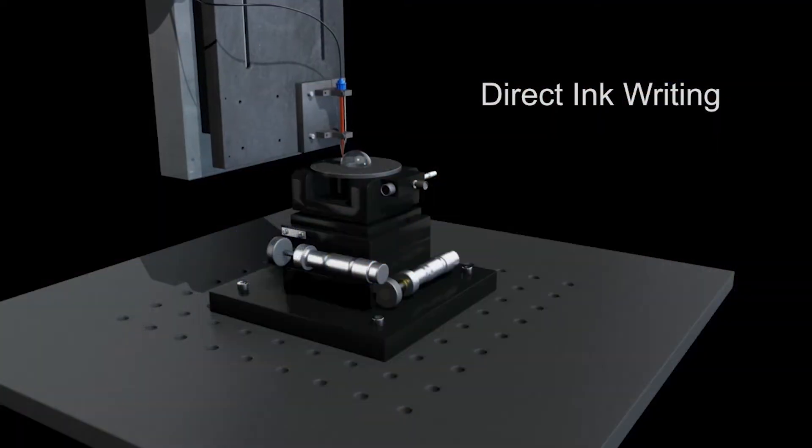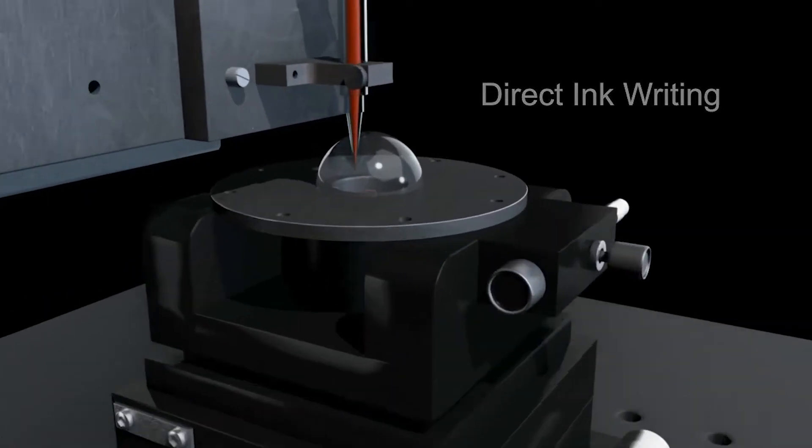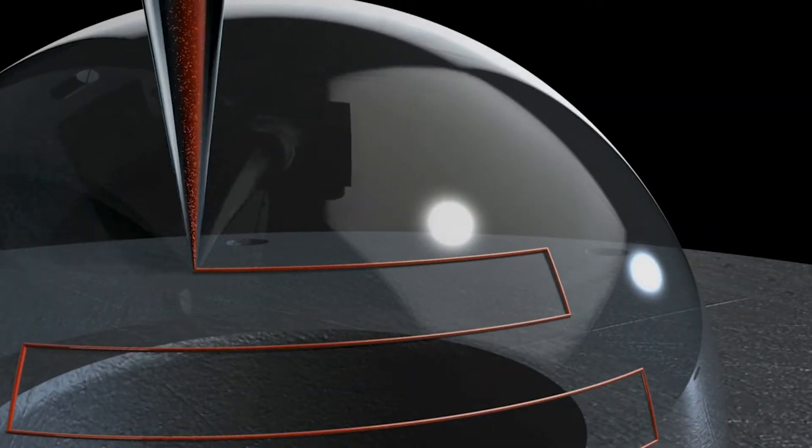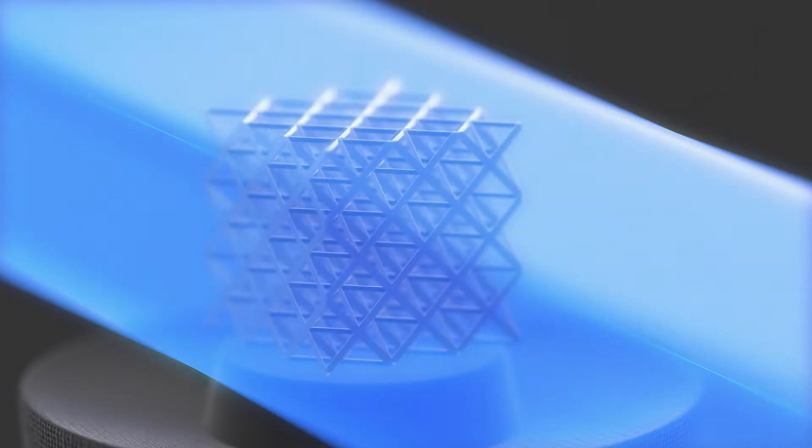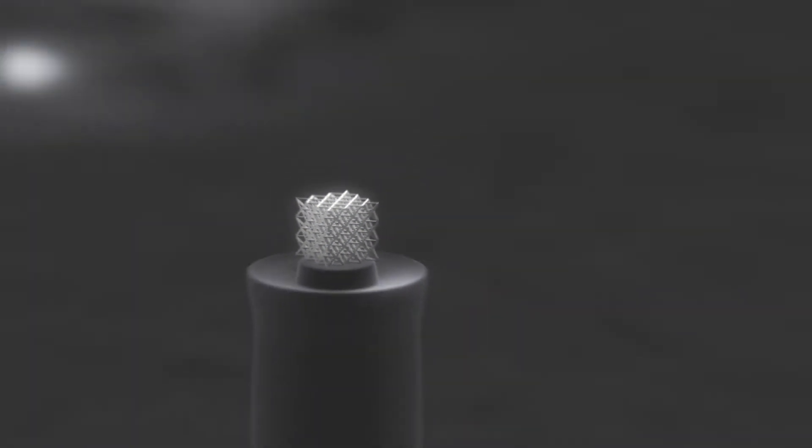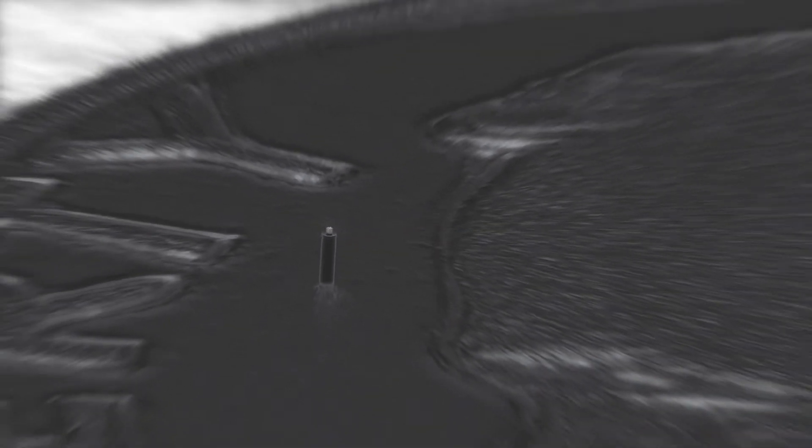Things such as micro scale stereolithography methods, direct ink write or extrusion based techniques that can print materials at the micro and nano scale. Another technique called two photon lithography, which uses lasers to create nano scale printed components.